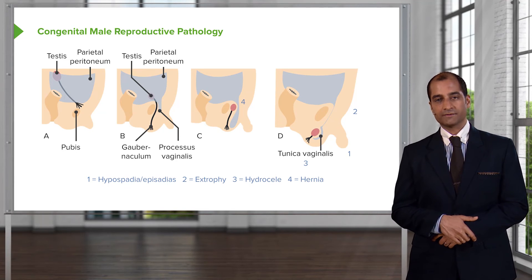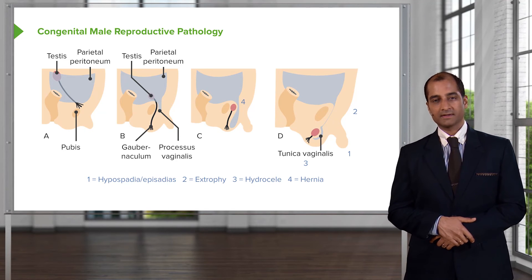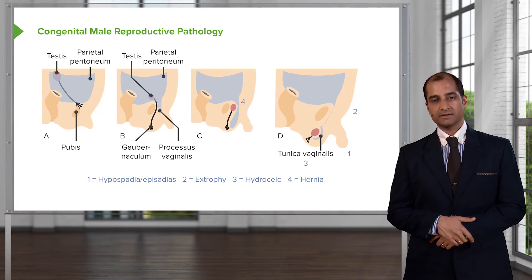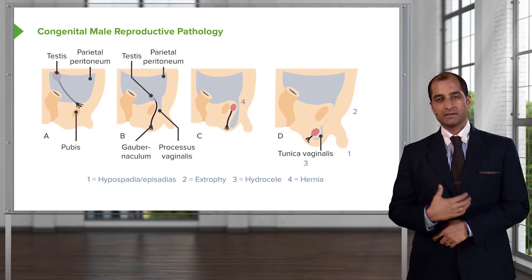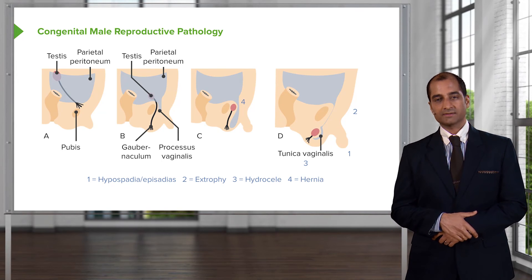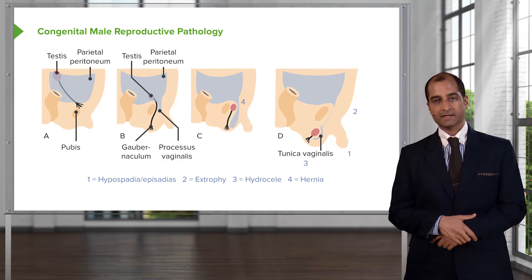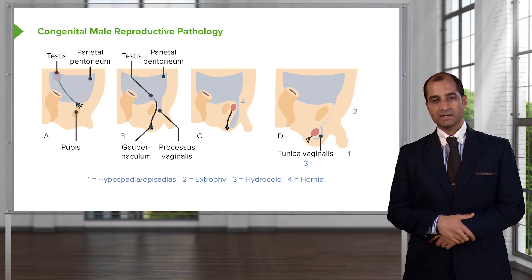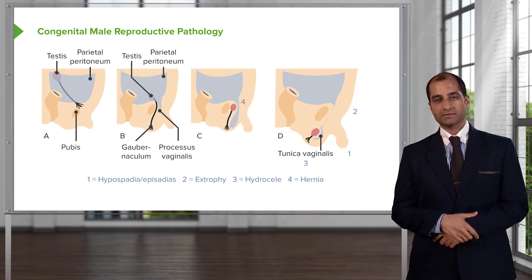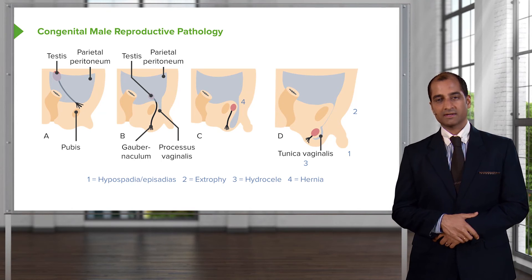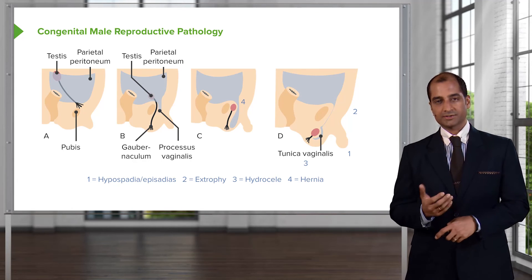If you have failure of lateral fusion of your abdomen, then you can have what's known as an omphalocele — herniation of the abdominal contents in the child that is still covered by the peritoneum. Compare that to gastroschisis, also from embryology, where the peritoneum is not covered. These are a couple of important embryologic issues.